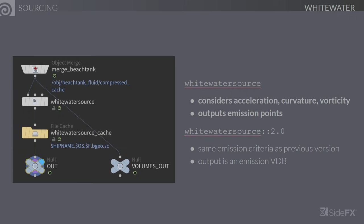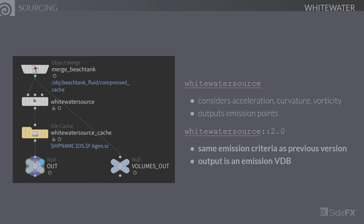Let's talk about sourcing. The previous system used a node called whitewater source that took the particles from the fluid simulation and considered criteria such as acceleration, curvature, and vorticity to identify which ones should be emitting. The output of this node was emission points that were then replicated by the solver. This was one of the major causes for the difficulty of controlling the amount of whitewater. So to address this issue, in whitewater source 2.0, we've moved to outputting an emission volume whose density corresponds to the probability of particles appearing at each voxel, making it a lot easier to control the whitewater amount.